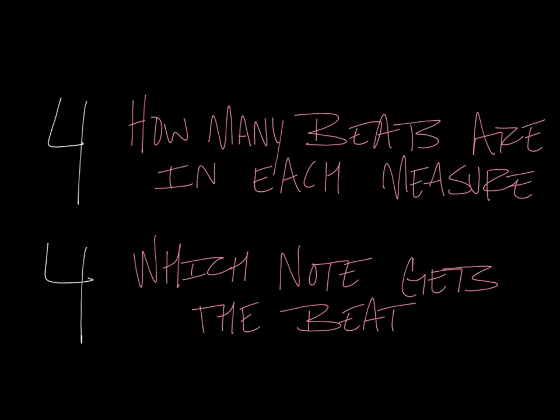Now, a time signature will just about always consist of two numbers: a top number and a bottom number. The top number in a time signature will always tell you how many beats are in each measure.